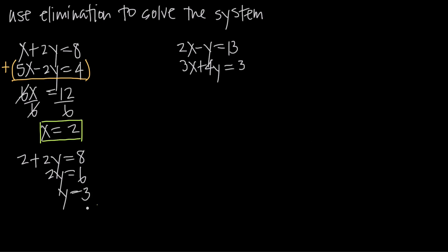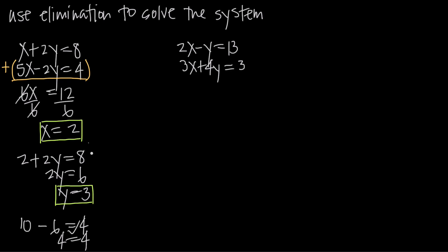Sometimes these problems get a little tricky, so once you find your solution, you want to double check yourself. We used the first equation, x plus 2y equals 8, to find the associated value for y. Now we take both values, x equals 2 and y equals 3, and plug them into the second equation to verify. Plugging x equals 2, we get 5 times 2, or 10. Plugging y equals 3, we get minus 2 times 3, or minus 6. So 10 minus 6 equals 4, which gives us 4 equals 4 — that checks out. The solution (2, 3) is a solution to this system of linear equations.